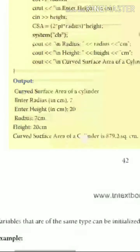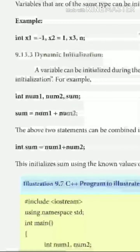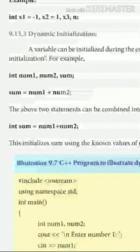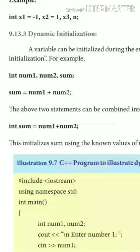Next is dynamic initialization. Dynamic initialization means the value will be assigned dynamically based on the input of the user or the calculation of a previous expression. Here you can see three variables created: n1, n2, and sum. Sum is equal to num1 plus num2, so the value of sum is based on the two previous variables num1 and num2.